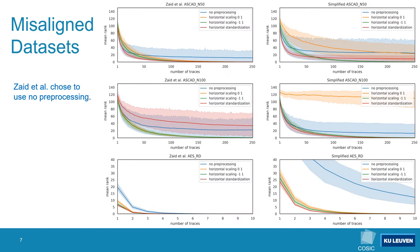Next we can look at the results when training the models for the misaligned datasets using different preprocessing strategies. In this case the preprocessing is applied horizontally or on a per-trace basis. We can see that neither our modified models nor the original models perform consistently over multiple training runs when no preprocessing is applied. Applying horizontal scaling between -1 and 1 or horizontal standardization seems to benefit both the original as well as the modified models in most cases. Interestingly, we get slightly worse performance on the AES-RD dataset, likely because we remove the non-linearity of the initial convolutional block. Nevertheless, we can easily obtain the same results as the original models by simply training for a few more epochs or slightly adapting the network.